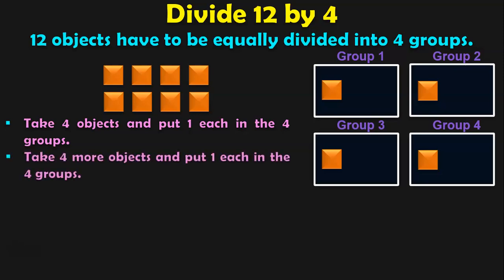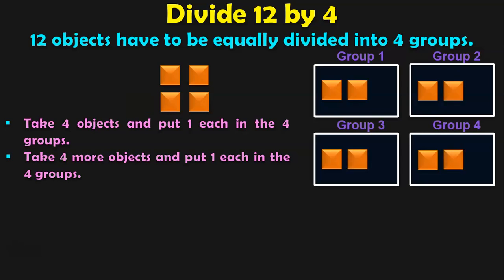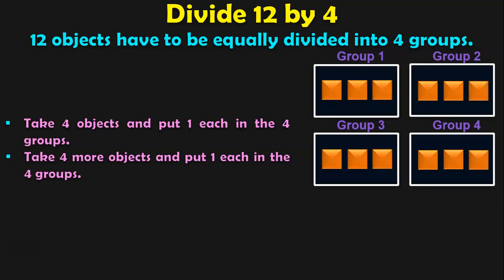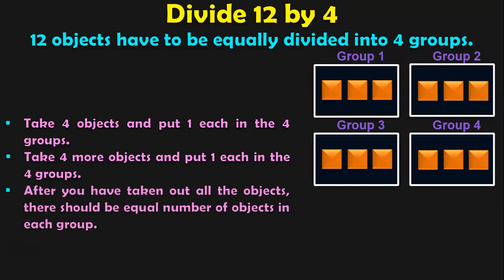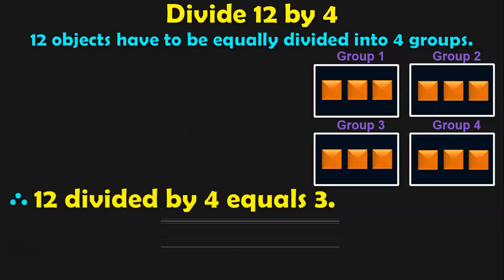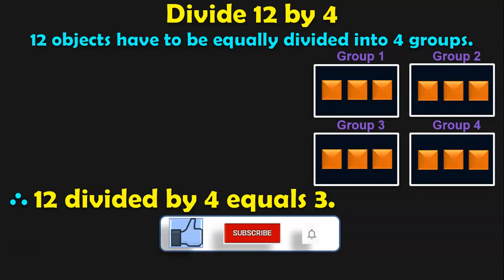Next step is to take 4 more objects and put 1 each in the 4 groups. We do have 4 more objects — take them and put 1 each in the 4 groups. You have to keep repeating this, and after you have taken out all the objects, there should be equal number of objects in each group. In this case, we have 3 objects in each group, which means that 12 divided by 4 equals 3.